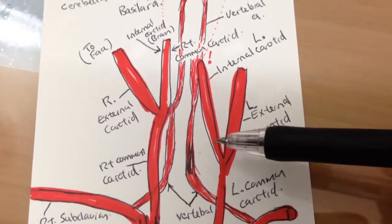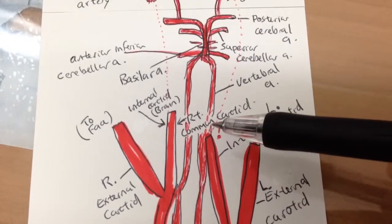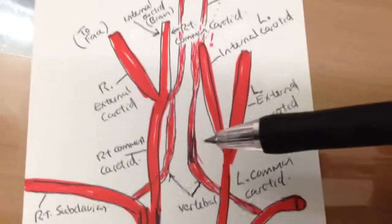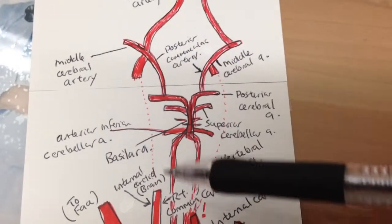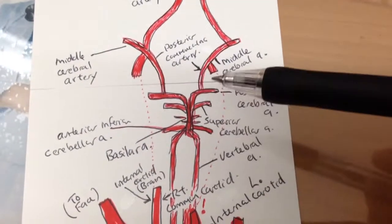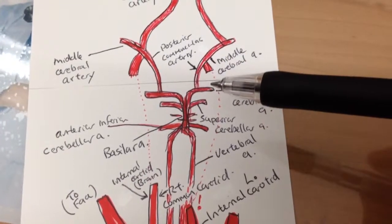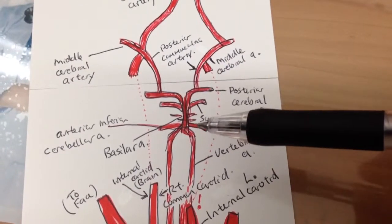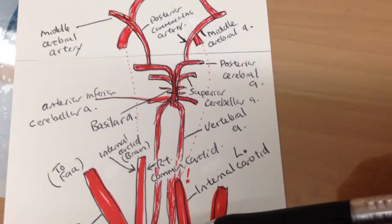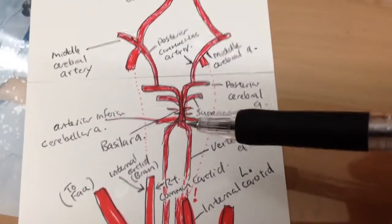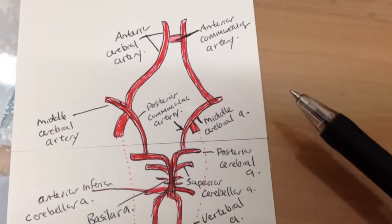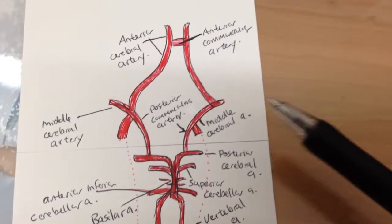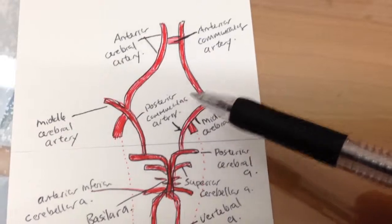We notice the vertebral arteries come off the subclavian and the common carotid arteries separate into the internal and external carotids. The internal carotids would be supplying the brain with blood along with the basilar artery which comes off of the vertebral arteries. This is very important to know.